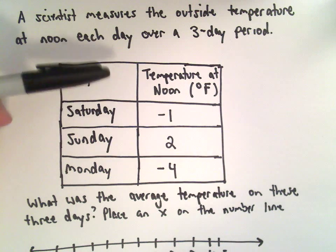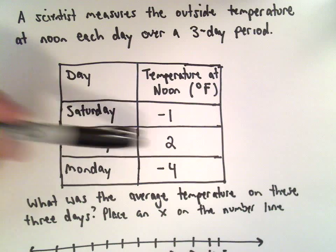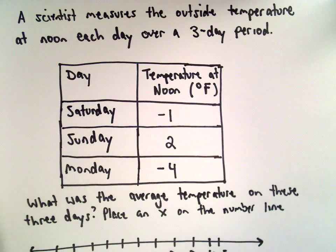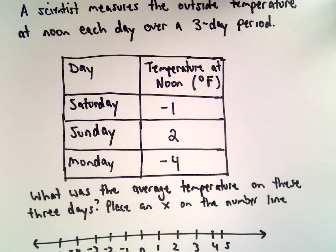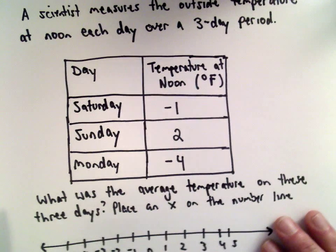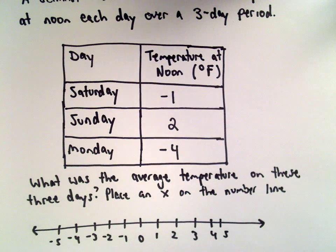So Saturday it's negative one degrees, Sunday it's two degrees, and Monday it's negative four degrees. So a pretty chilly day there. They want to know what's the average temperature over these three days, and we'll just place a little x on the number line.